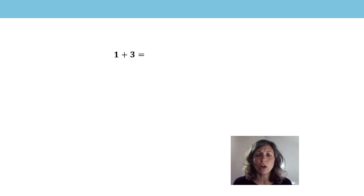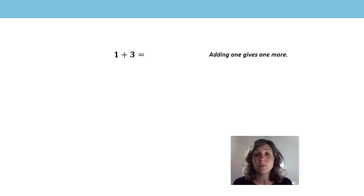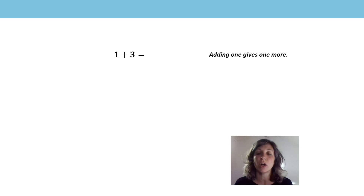So let's have a look at the facts that we already know. 1 plus 3 — I know that adding 1 gives 1 more, so I'm going to change the position of the addends and the sum will remain the same. I'm going to think of it as 3 plus 1, and it's 1 more, so that will be 4.